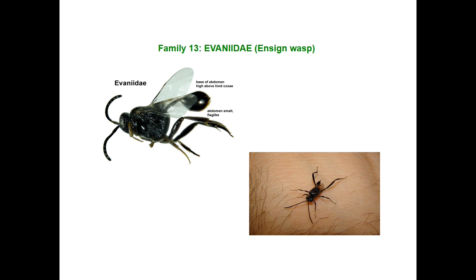Next family is Evaniidae — ensign wasps. Here the petiole is long and slender. The gaster is short, compressed, and attached to the propodeum. The gaster is attached to the propodeum by a slender petiole and is carried almost like a flag. They are parasites on cockroach eggs.